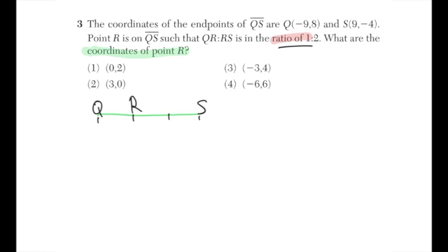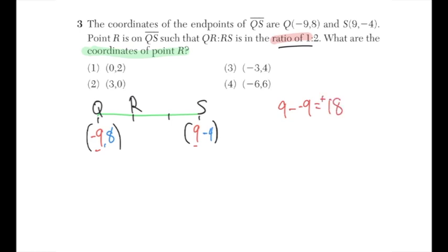The x-coordinates are −9 and 9; the y-coordinates are 8 and −4. To find the rate of change going from Q to S: for x, 9 − (−9) = 18; for y, −4 − 8 = −12. Since the segment is divided into three parts, divide both by three: 18/3 = 6 and −12/3 = −4. Each step adds 6 to x and subtracts 4 from y.